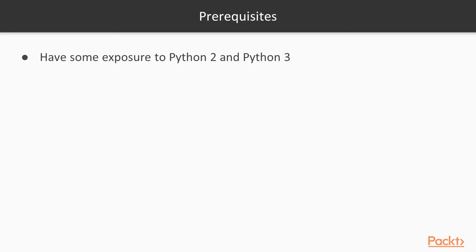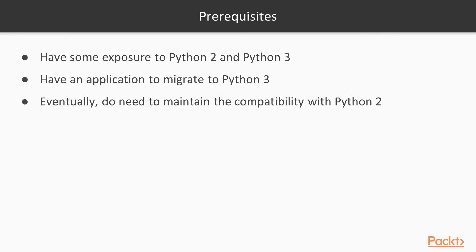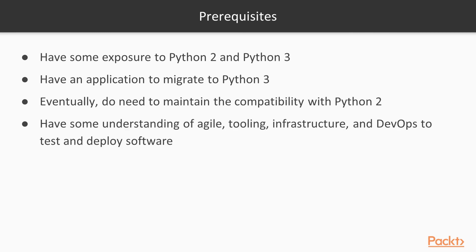The prerequisites of this class are that you need to have some exposure to both Python 2 and the essentials of Python 3. You also need to have an application to migrate to Python 3, and eventually maintain compatibility with Python 2. You also need some understanding of agile, tooling, infrastructure, and DevOps to test and deploy software in both Python 2 and Python 3.